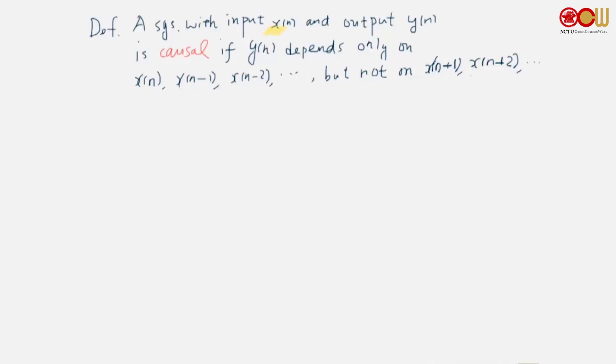We say a system with input x(n) and output y(n) is causal if y depends only on x(n) and past samples of x(n), but not on x(n+1), x(n+2), these future samples of x.